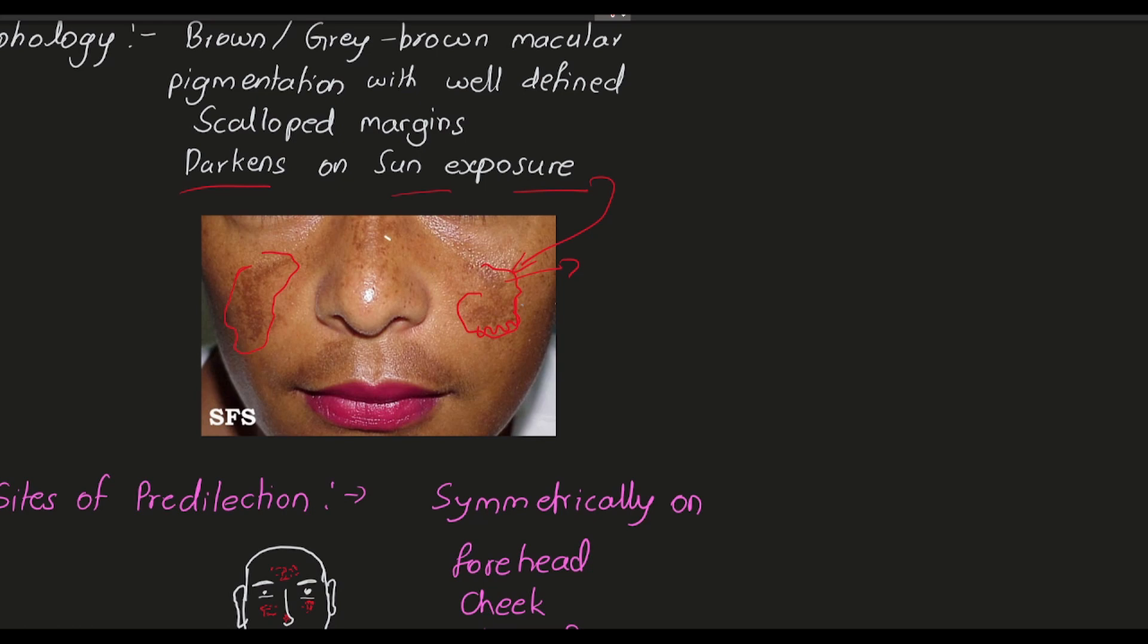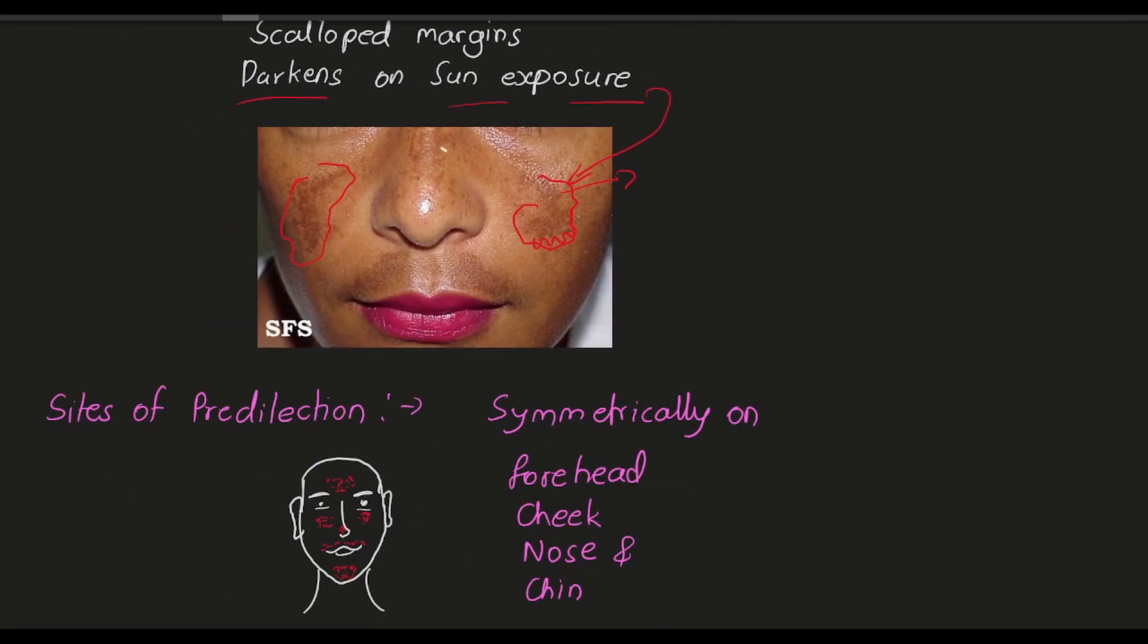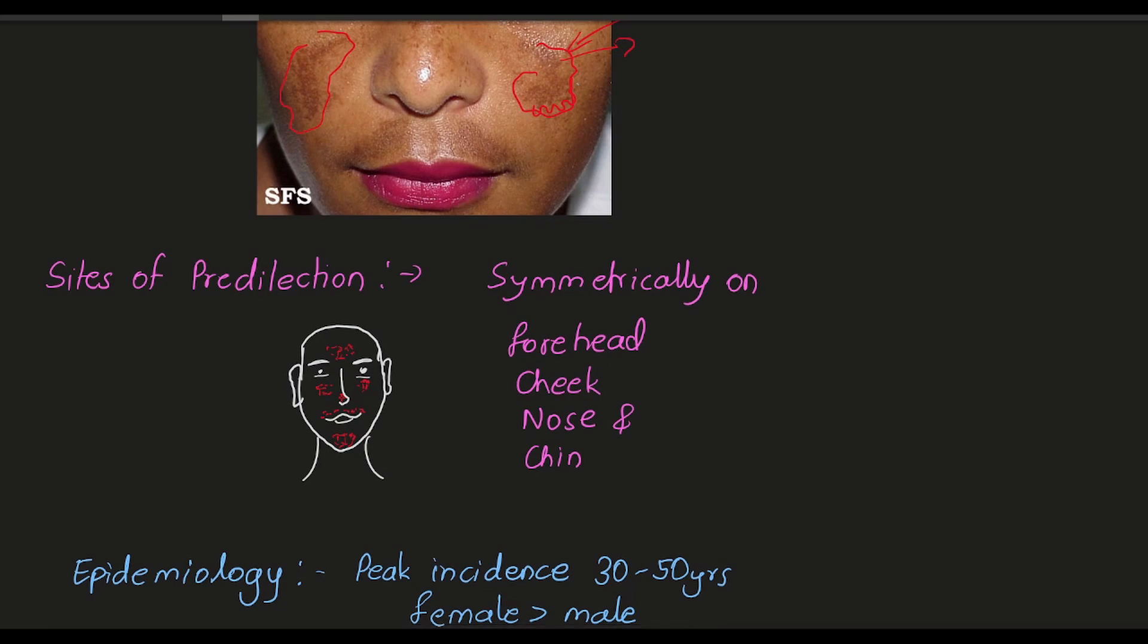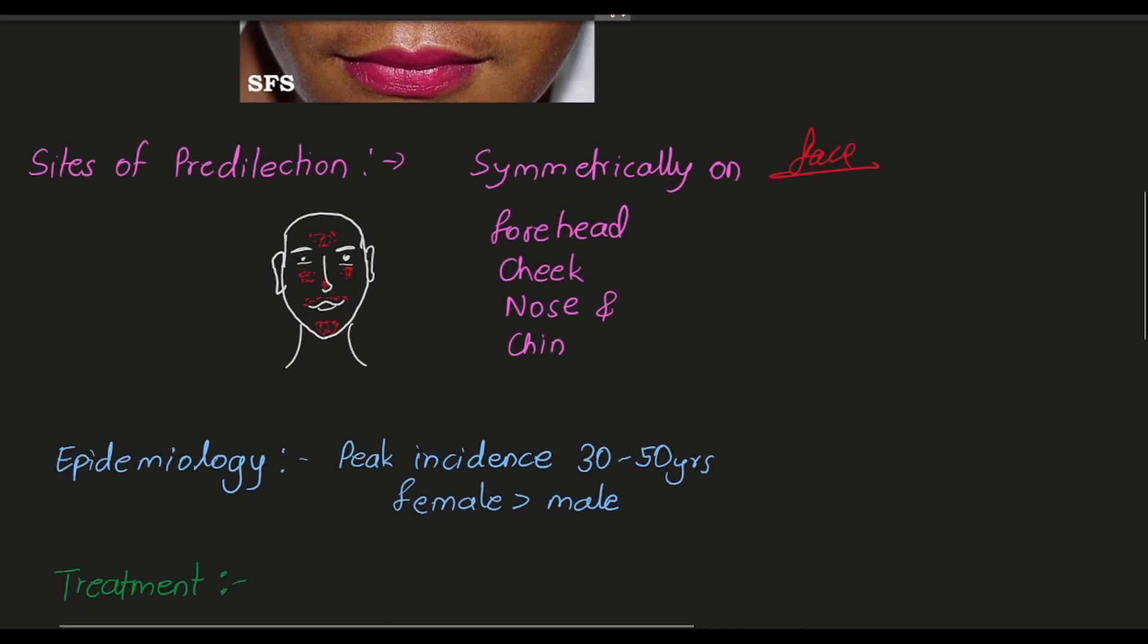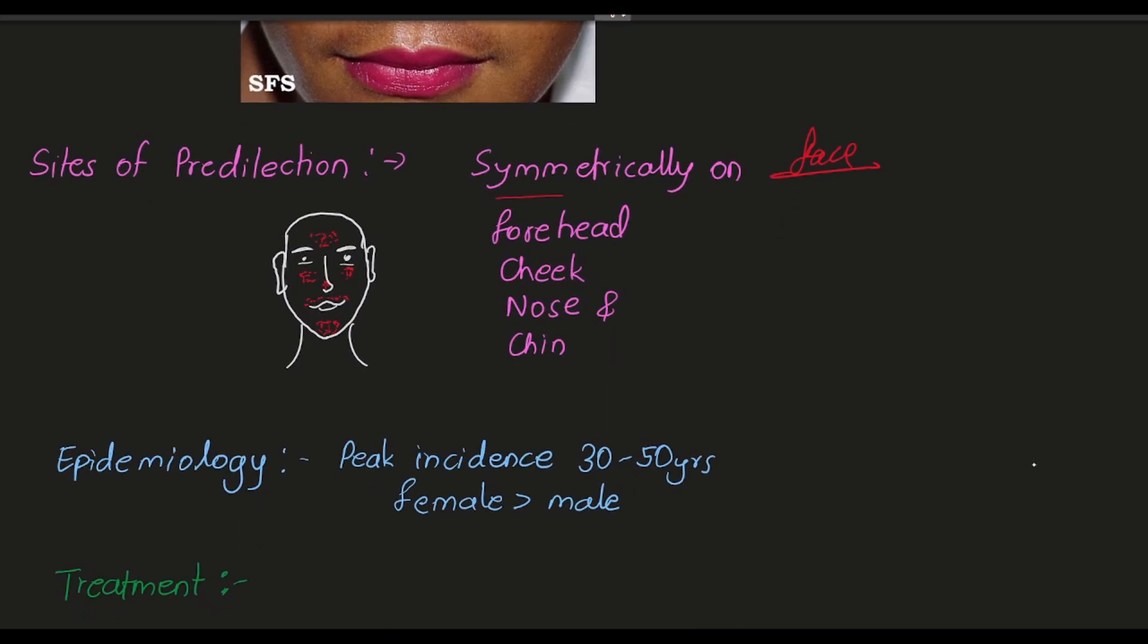What are the sites of predilection? It mainly appears on the face, and this melasma is symmetrical. We can see it on the forehead, cheek, chin, and nose.